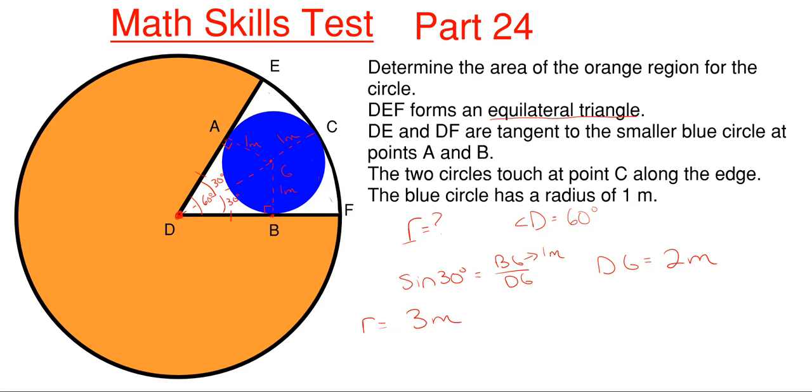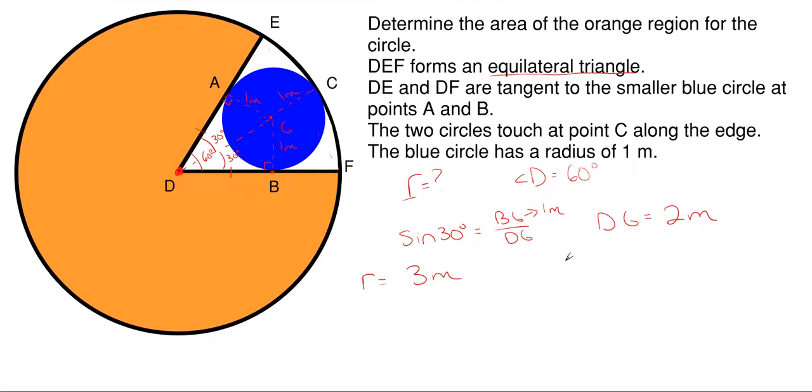Okay, so now we have to determine how much of our area is missing. Well, we would just take our angle of that portion, which is 60 degrees, over the total of the circle, which is 360, and that means we're missing one-sixth of our total circle here.